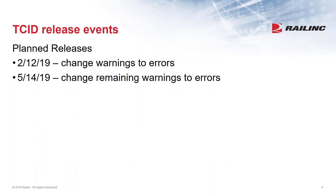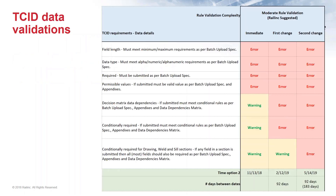We have a couple of releases planned in the next few months. The first two are finishing up what probably should have been included with phase one. Right now, if you submit a file with inaccurate data in certain fields, we're accepting the submission and letting users know there's a warning on the field - meaning the data did not comply. These releases are changing those warnings, which allowed submission of files with dropped data, to actual errors so files will not be submitted.